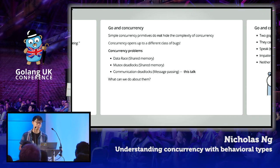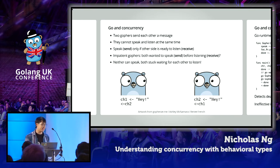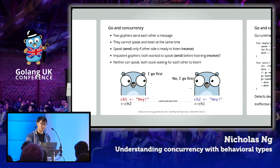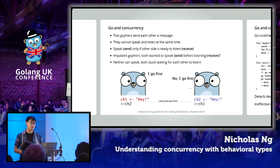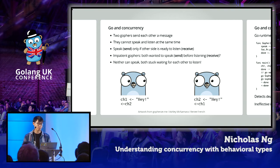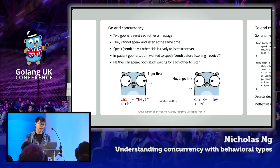Let's look at an example of communication deadlocks. Suppose two Gophers try to send each other a message. Gophers are really simple creatures — they can't multitask, so they cannot speak and listen at the same time. In order for one Gopher to pass a message to another, the Gopher will only speak if the other side is ready to listen. What if both Gophers are impatient and both want to speak before they listen? Then neither can speak, and both Gophers will be stuck waiting for each other to listen — but they both want to speak first.